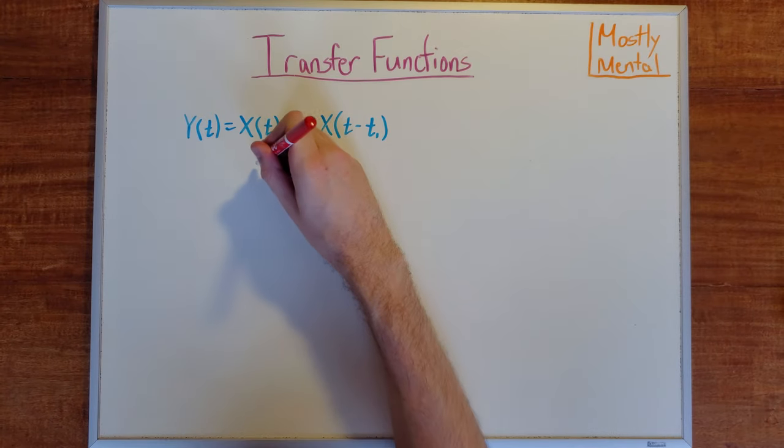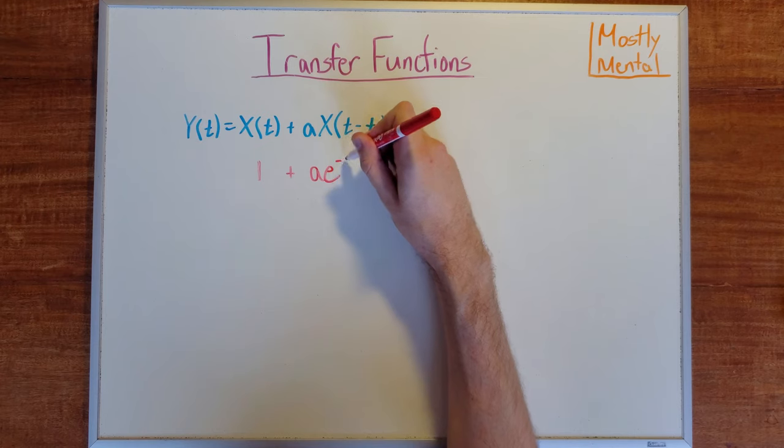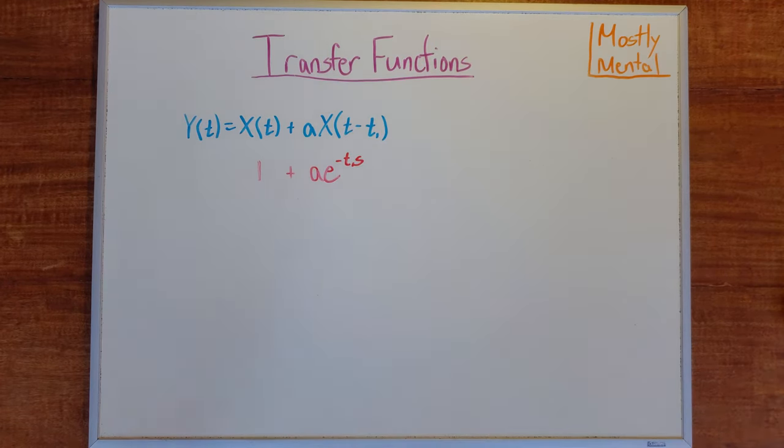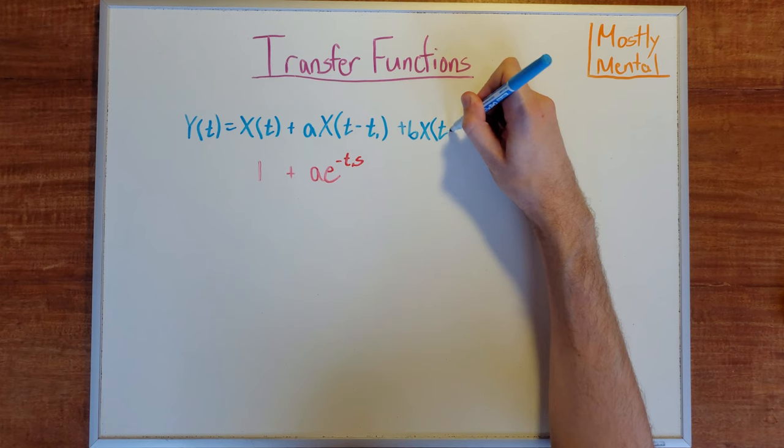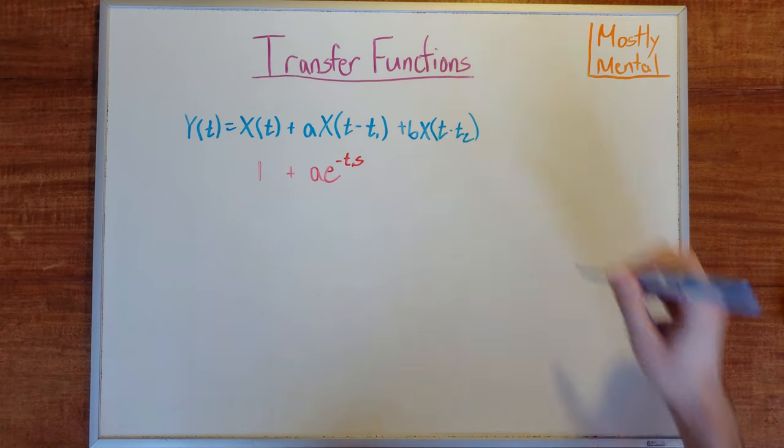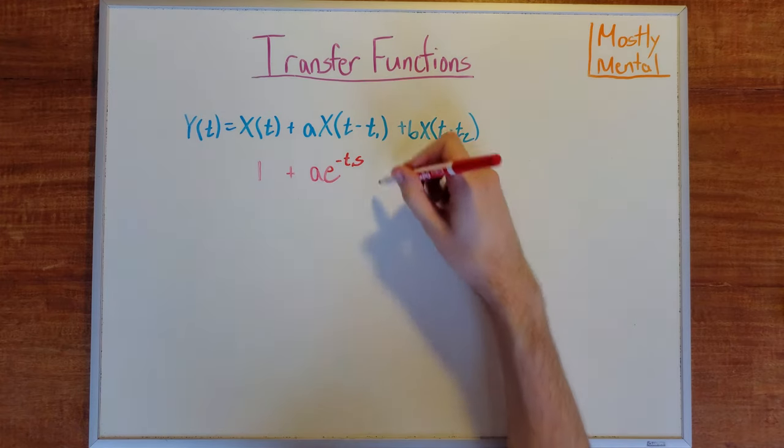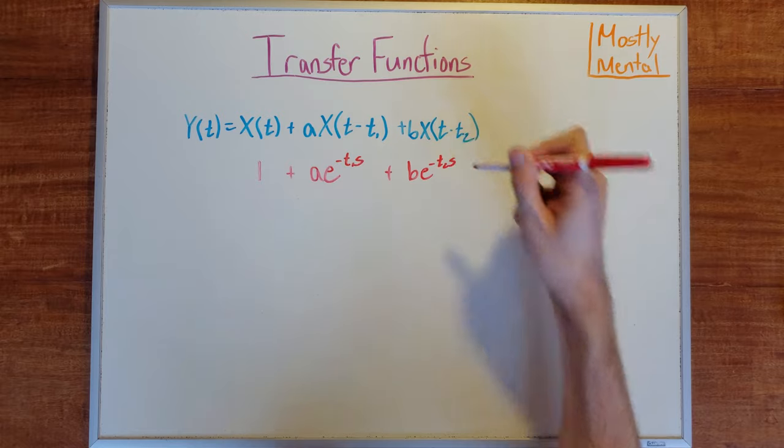Of course, sounds can bounce more than once. That echo may itself echo off another wall, which would give us another term here, bx of t minus t2, which corresponds to another term in the transfer function. That's b e to the negative t2s.